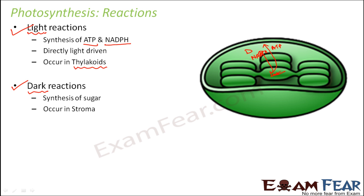So how are we going to divide this lesson? First we will talk only about the light reactions — the various ways by which the synthesis of ATP and NADPH take place. Once we complete our discussion on light reactions, then we will start with dark reactions. But even before we start talking about light reactions and dark reactions, we should talk about the pigments, like chlorophyll. Is chlorophyll the only pigment present in green plants, or are there other pigments also? So let us spend some time talking about the pigments. Once we are clear with the knowledge on pigments, then we will talk about light reactions followed by dark reactions.